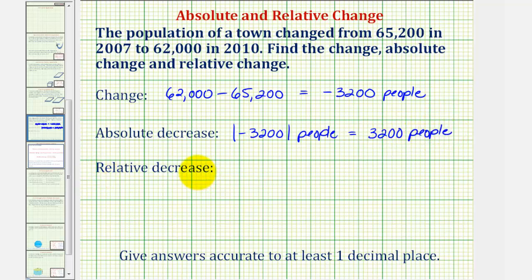And then the relative decrease expressed as a decimal would be the absolute decrease of 3,200 people divided by the base of the starting population of 65,200 people. So notice how the units of people simplify out, and now we'll convert this quotient to a percentage.